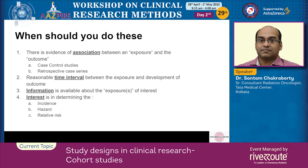In study design, cohort studies and case-control studies are examples of observational study designs which allow you to determine the association between variables. If you are looking for a causative link, you need to perform an experimental study, an example of which is a randomized controlled trial.